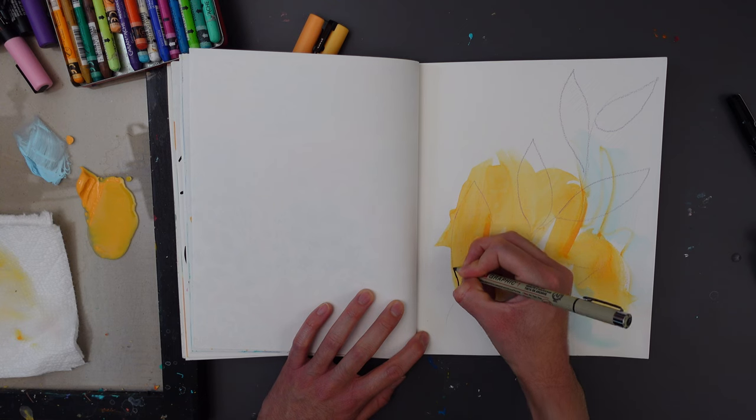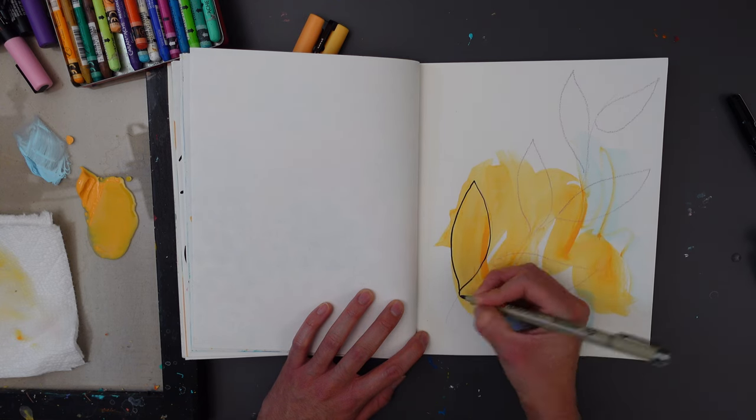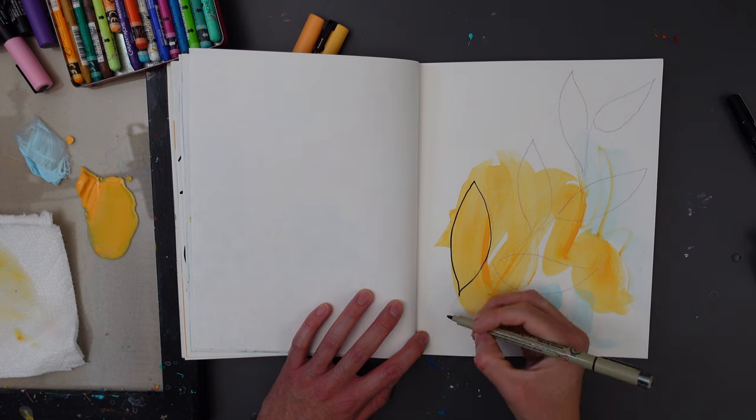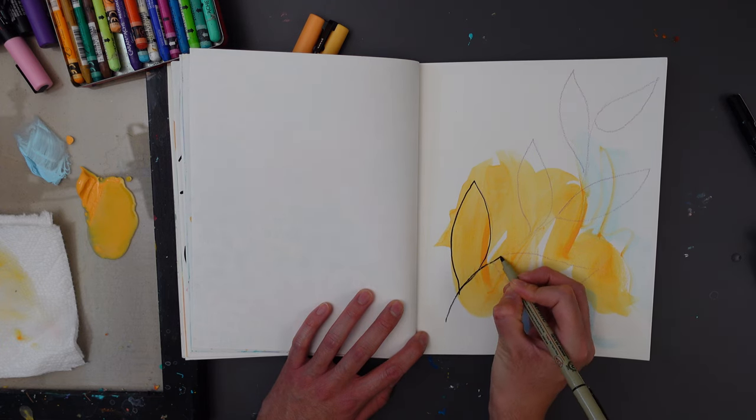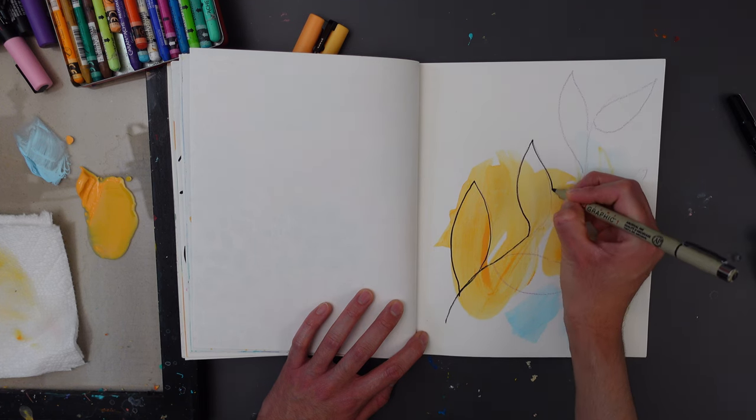And tracing over it is totally optional as well. If you just kind of want to leave it pretty light and make the marks pop out a little more, that's cool too.